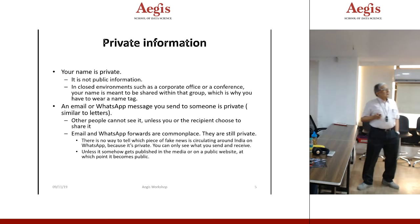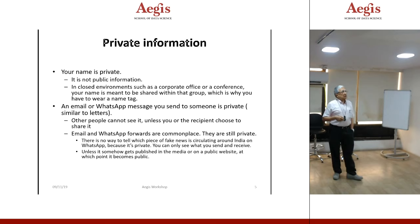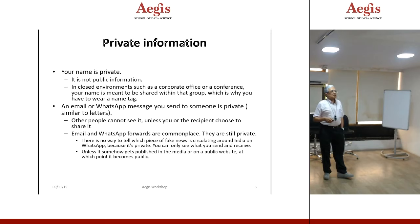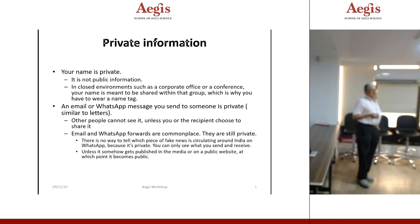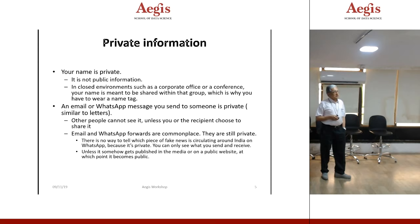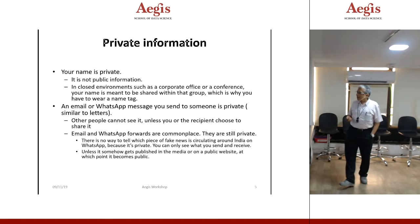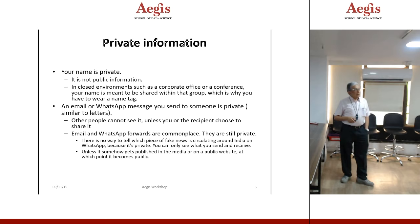In a closed environment like a corporate office or conference, your name is meant to be shared within that group, which is why we bear a name tag. An email or WhatsApp message you send to someone is private — similar to letters. When sent peer-to-peer, it is supposed to stay between you; other people cannot see it unless the recipient chooses to share it. Forwarding is still private. There is no way to tell which fake news is circulating on WhatsApp, because it is private — you can only see what you sent and received. Unless it gets published publicly, at which point it becomes public.